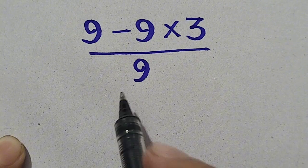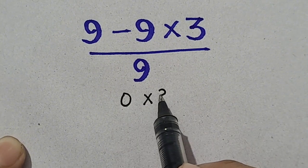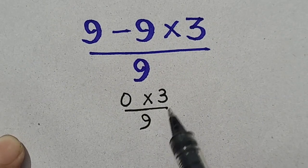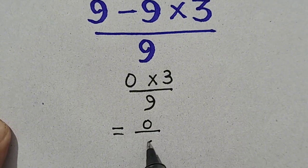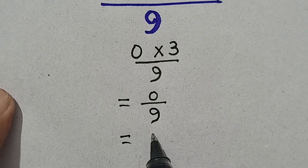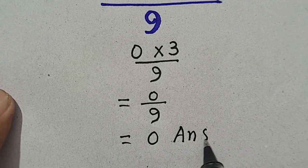So 9 minus 9 will be equal to 0 times 3 divided by 9. So 0 times 3 will be equal to 0 divided by 9. So 0 divided by anything will be 0. So 0 will be our answer.